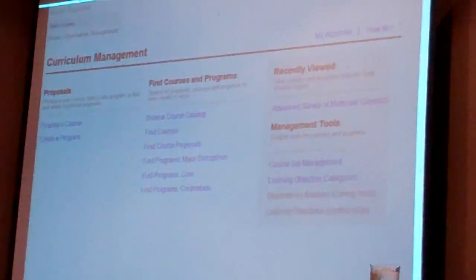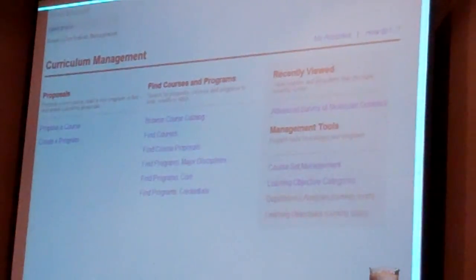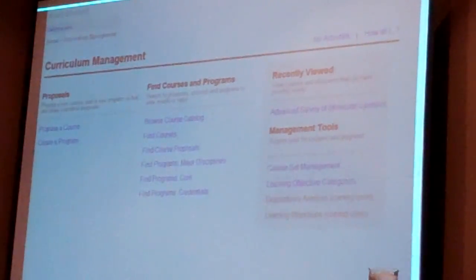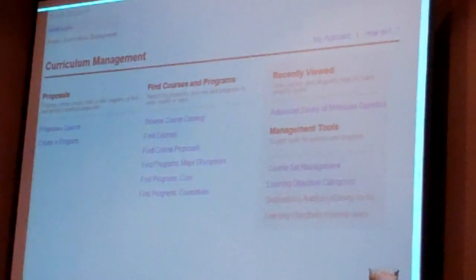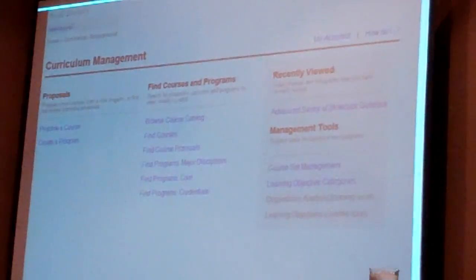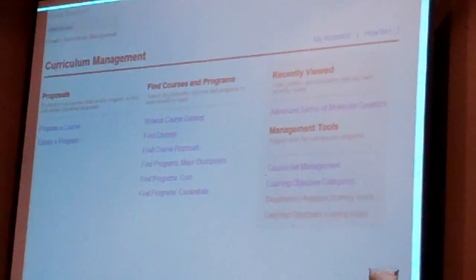The next demo is modifying this course. The things I want you to take away: how we navigate to modify a course — the preferred UX pathway is to find the course first and then modify from there. We'll see a side-by-side comparison of the original course and the proposed modifications. And finally, we're going to look at adding a prerequisite, which lets us demo our rule system, a course set, and more specifically a dynamic course set.